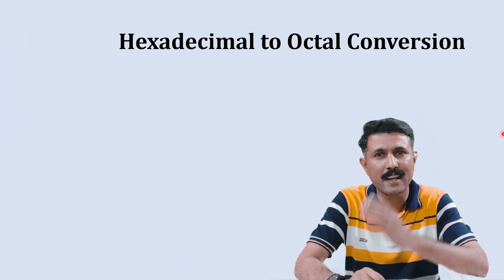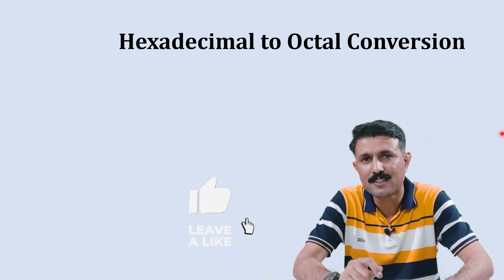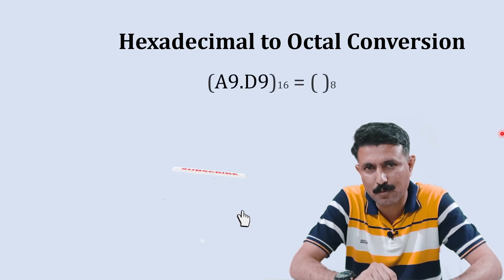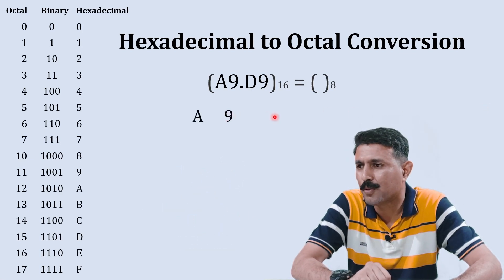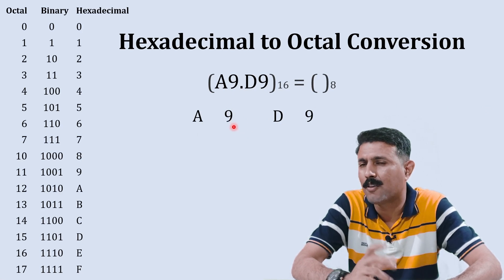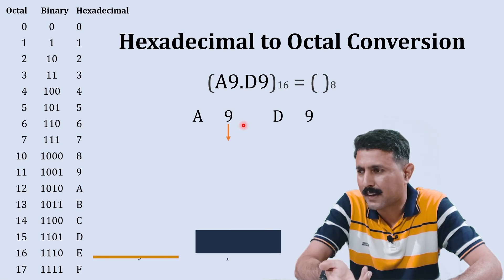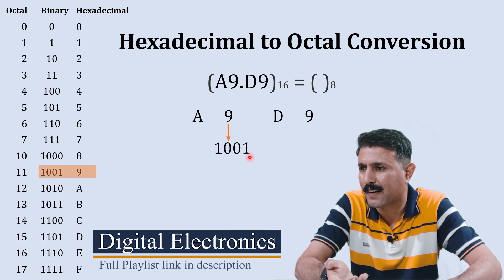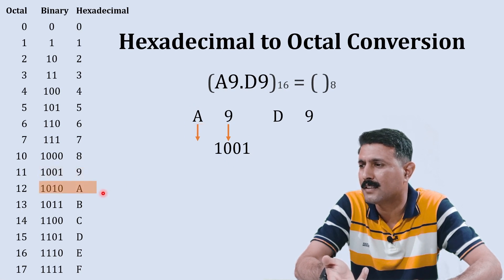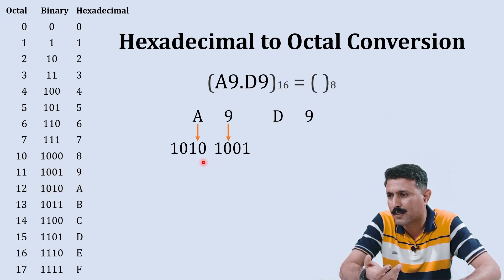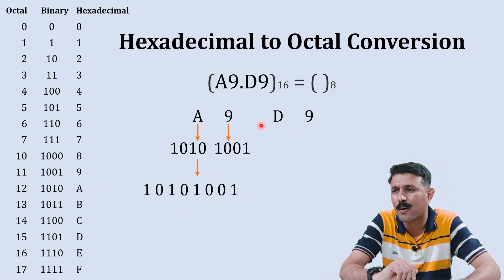Now we are going to convert a hexadecimal number to octal. This is our number and this is the reference table we'll use. We'll write both the integer part and fractional part. Starting with nine in the integer part — binary equivalent to nine is one zero zero one. Then A — binary equivalent to A is one zero one zero. We combine both to form the complete binary number, then move to the fractional part.